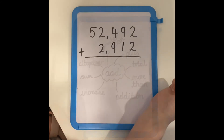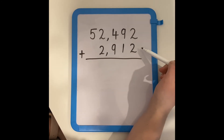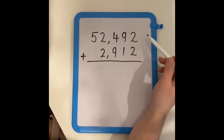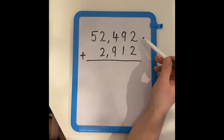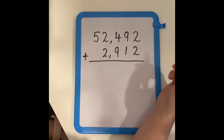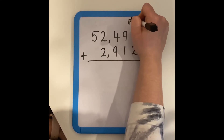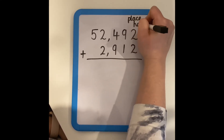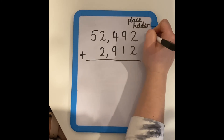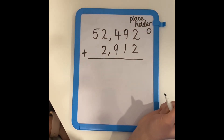We are now going to look at adding a five digit and a four digit number. There is something we can use when adding together two numbers that don't have the same number of digits, and this is called a placeholder. We use the digit zero to represent a placeholder.